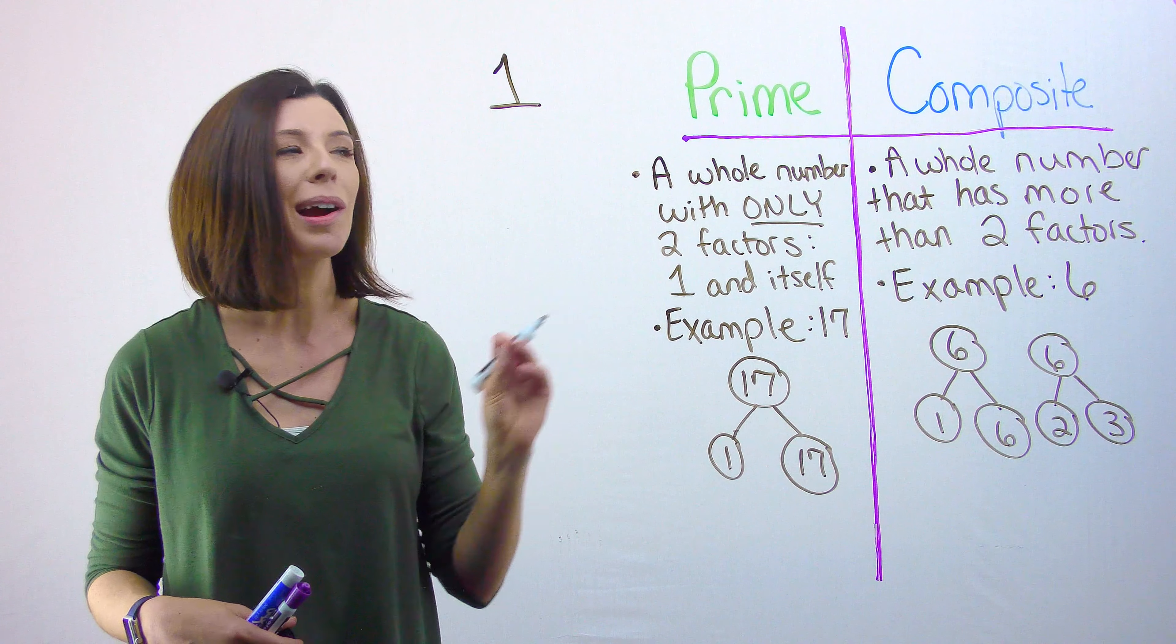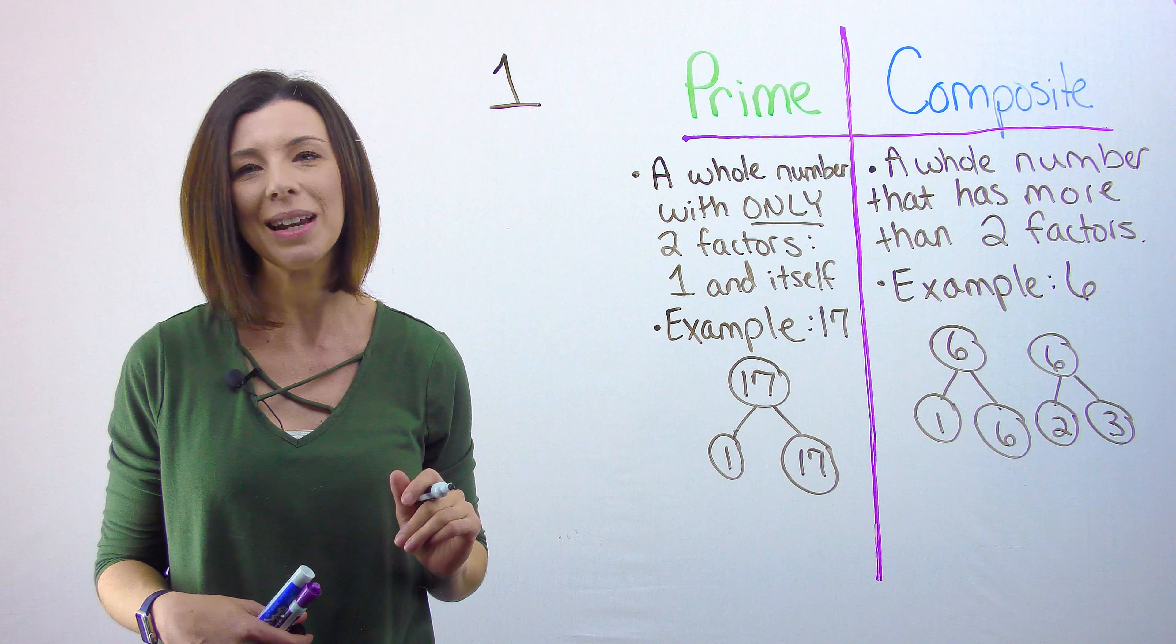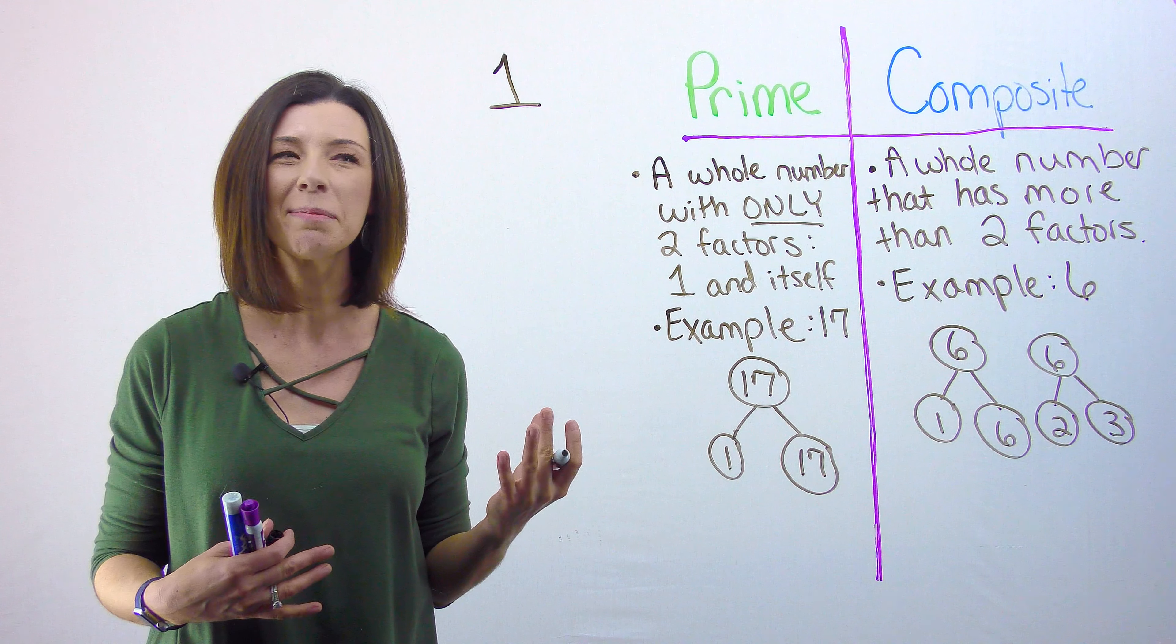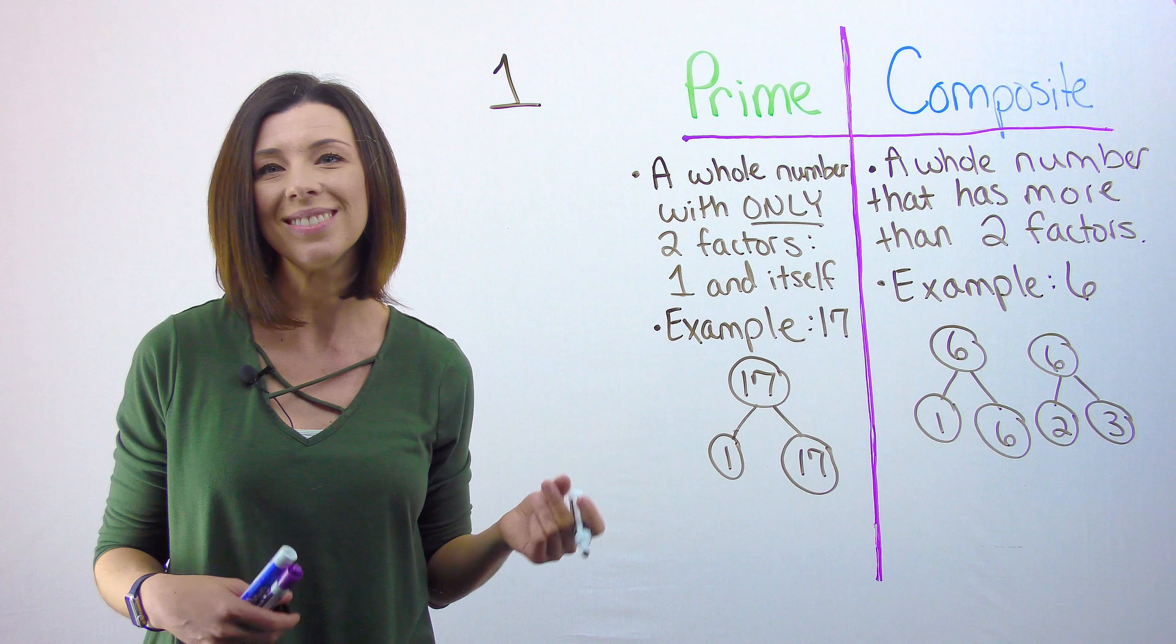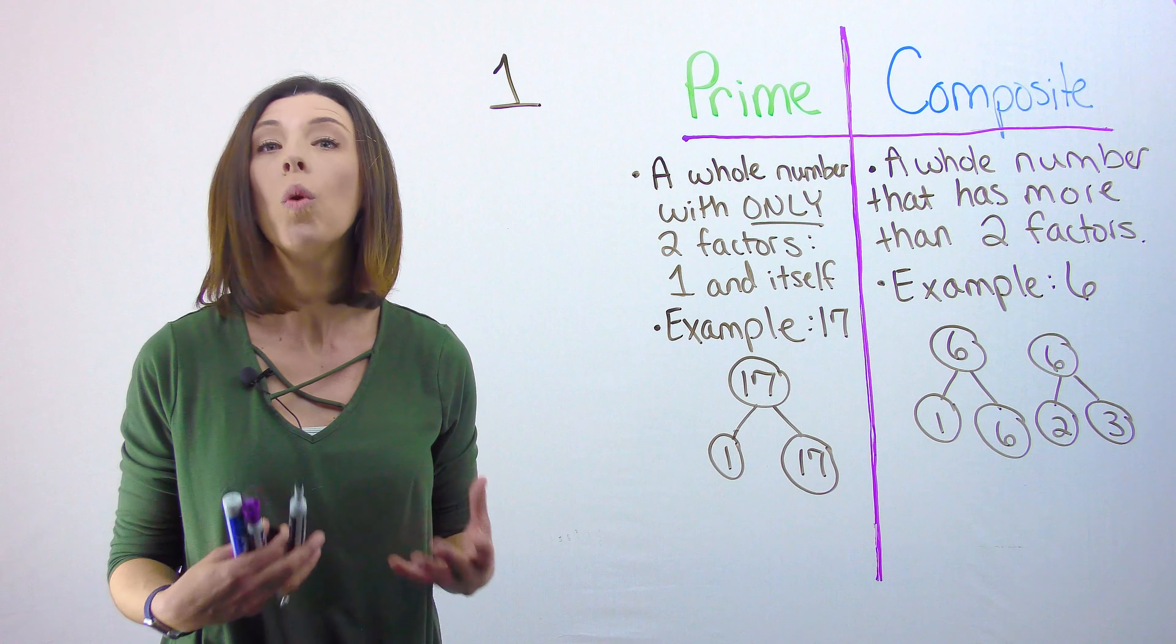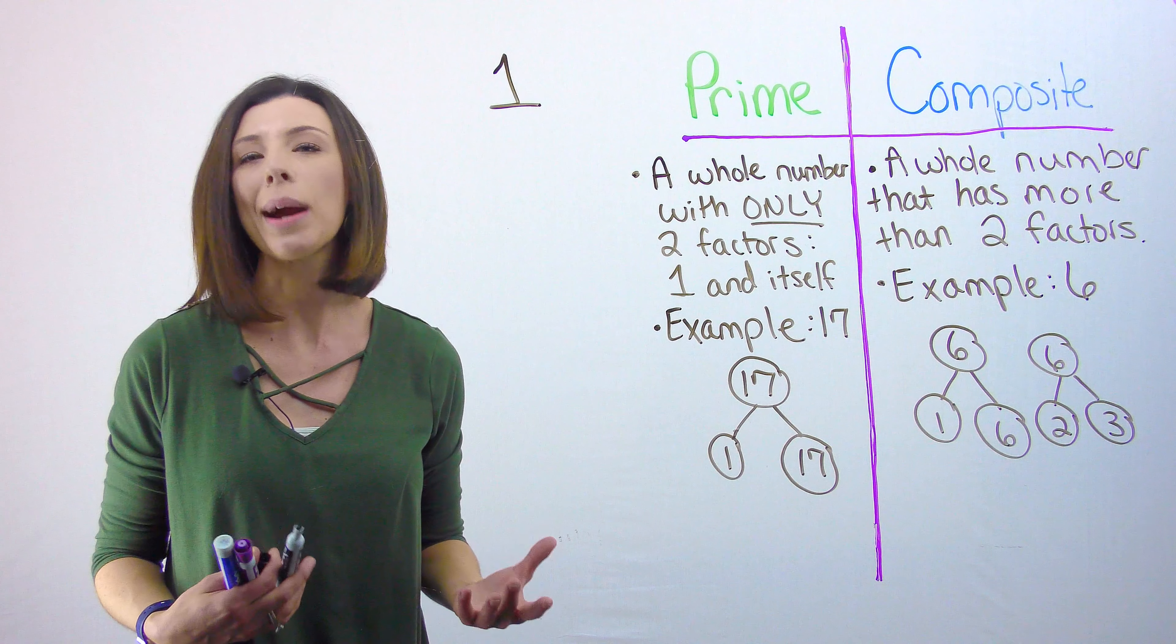One doesn't count as prime, and it doesn't count as composite, because it actually only has one factor, one. Because one only has one divisor, it's not prime or composite.